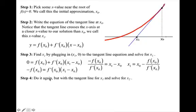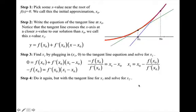Step four: you're going to do it again, but with the tangent line for x₁, and then you're going to solve for x₂. So it will look like this. So now you're going to use the x-value x₁ and write the equation of this tangent line, and then you're going to solve for x₂.